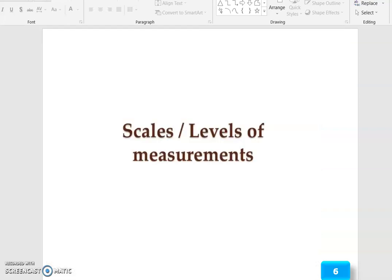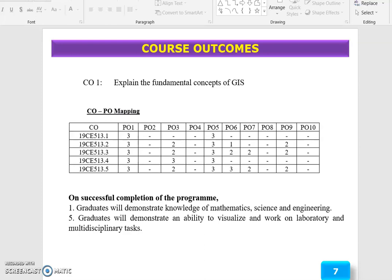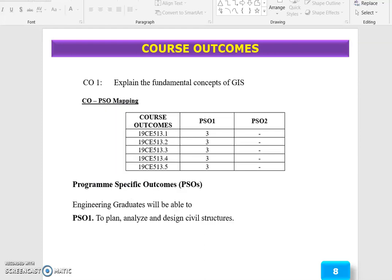Scales and levels of measurement. The course outcome of this topic is to explain the fundamental concept of GIS. This will be integrated with PO1, PO5, and PSO1. The outcome of this topic is the clear explanation about the fundamental concept of GIS.